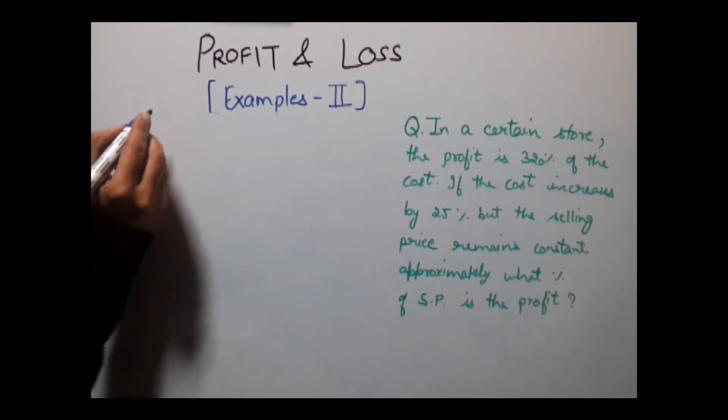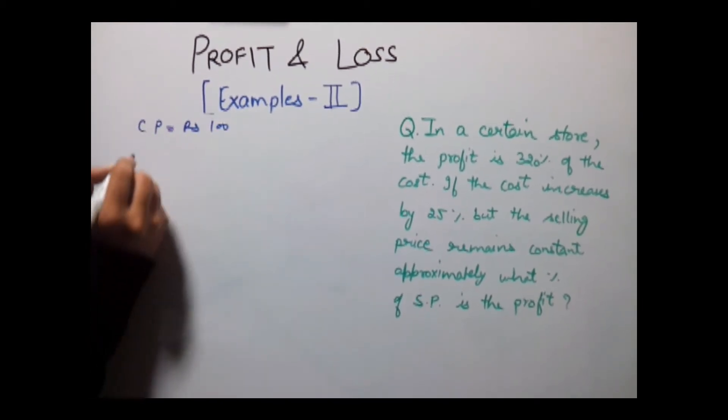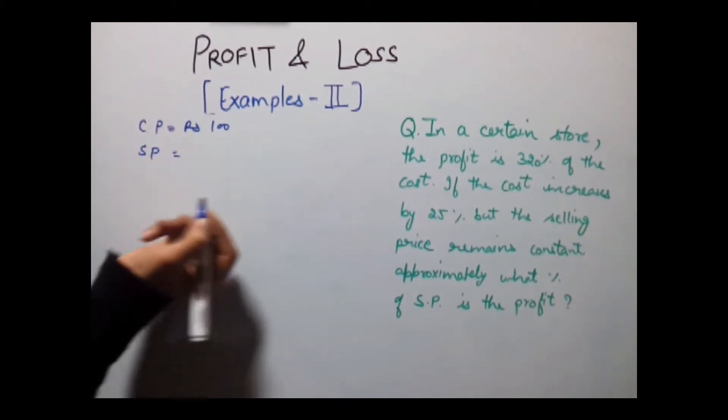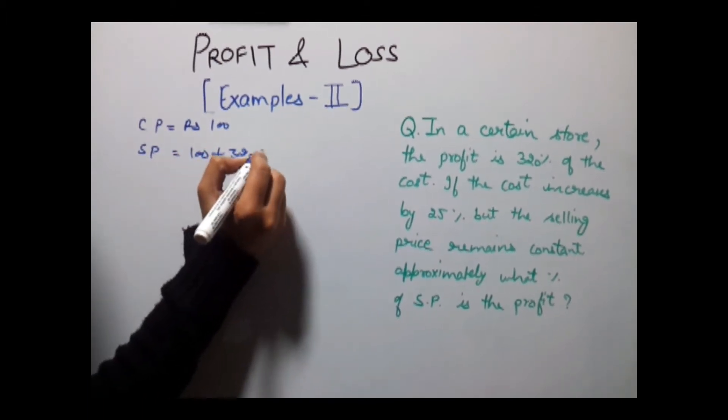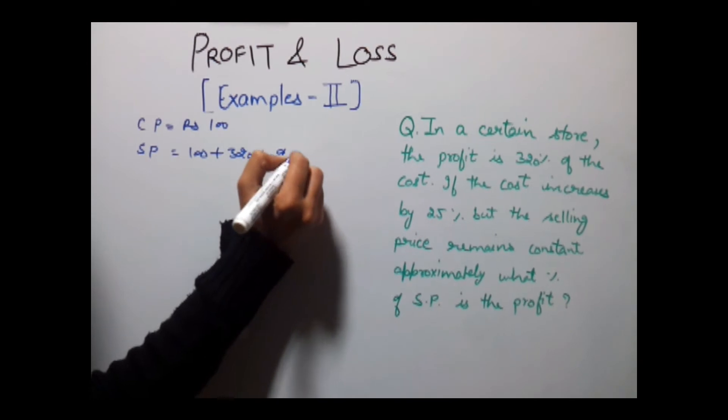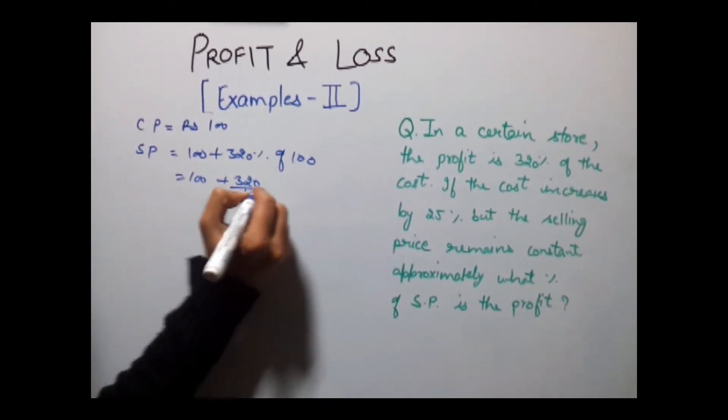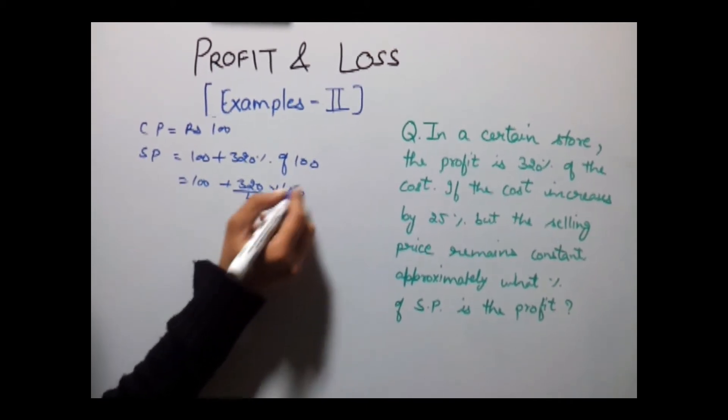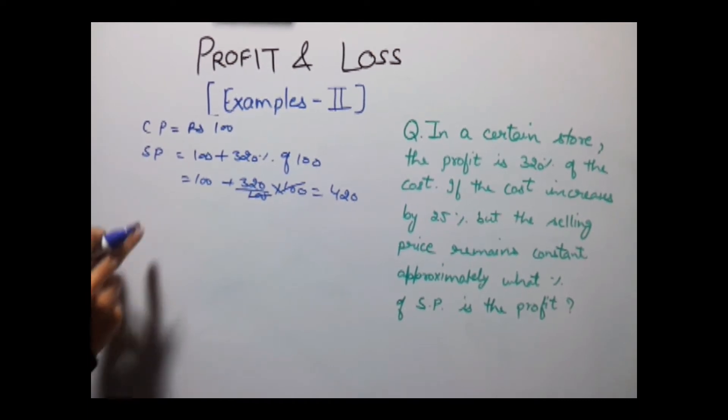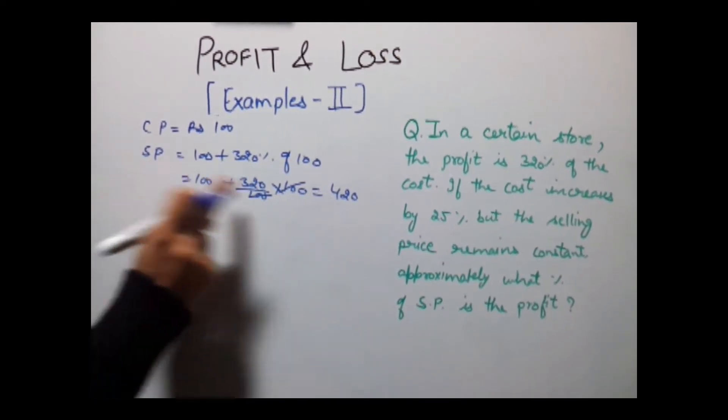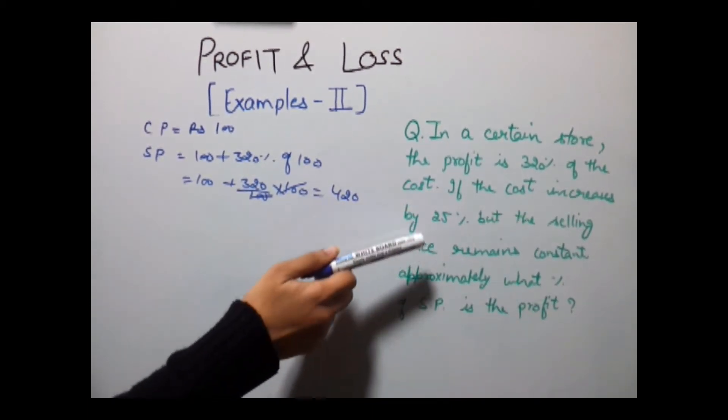Let's assume that cost price of the product is rupees 100. So our SP would be equal to 100 plus 320 percent of 100, which is equal to 100 plus 320, equals 420. So this is our old SP and this is our old CP.